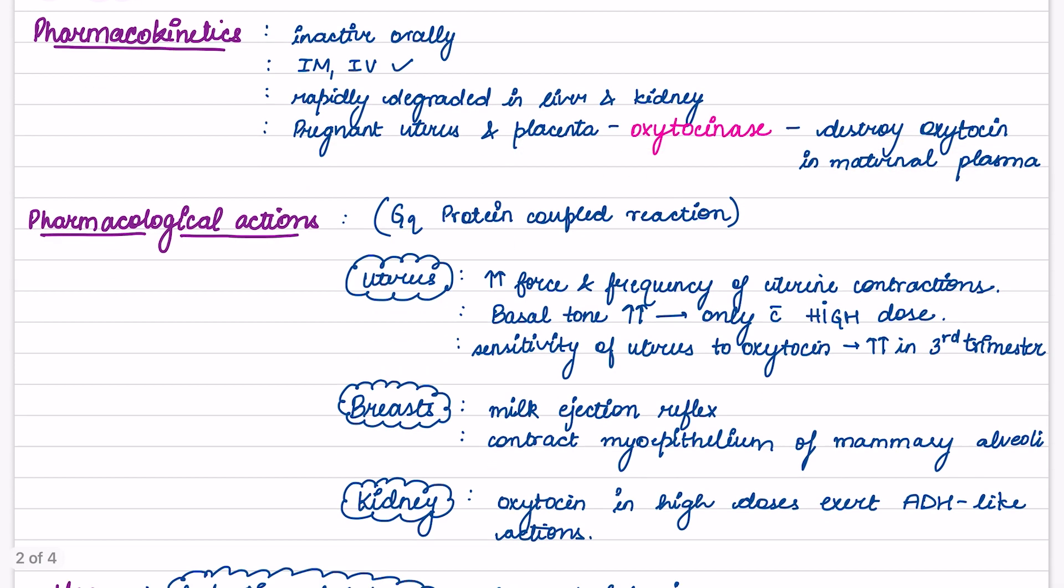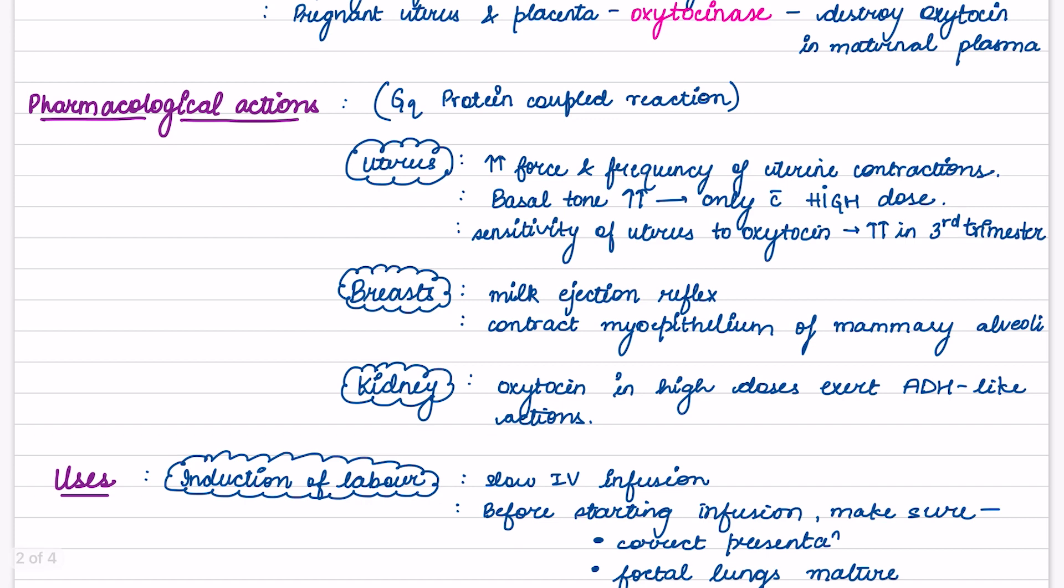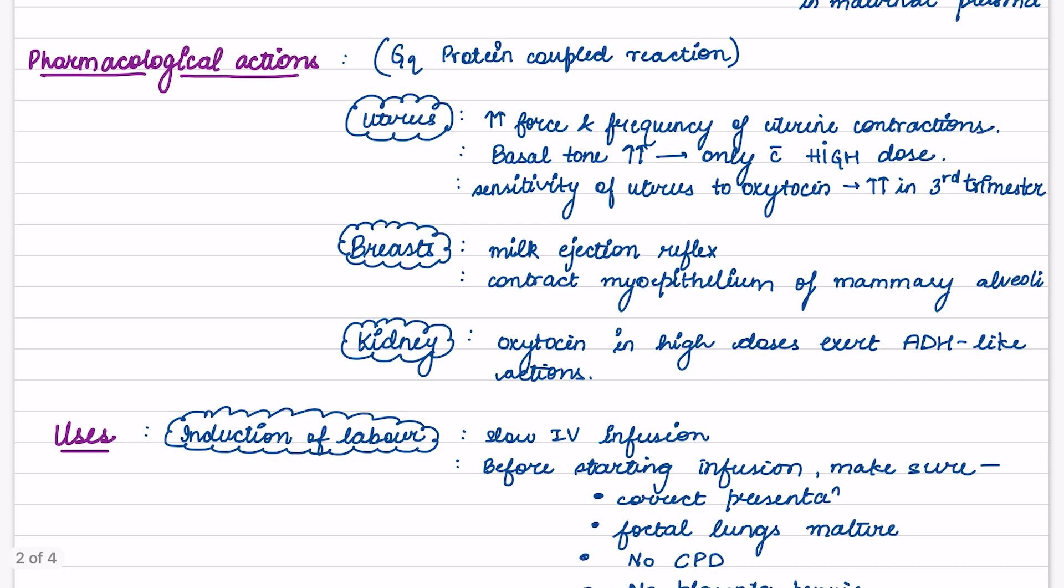Now moving on to pharmacological actions. The receptors for oxytocin are GQ protein coupled receptors. So what happens in this? Phospholipase C activates. In uterus, what does it do? It increases the force and frequency of uterine contraction. Basal tone is increased only with high dose. Sensitivity of uterus to oxytocin increases in the third trimester.